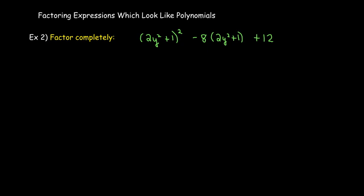In my second example, I actually do have a polynomial, but I really don't want to multiply out the two y squared plus one squared, and then multiply out the minus eight times two y squared plus one, and then go through and collect all the terms and then try to factor it. I don't have to do that. Instead,